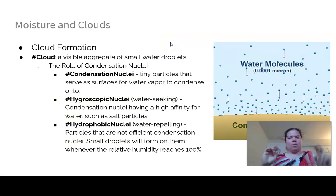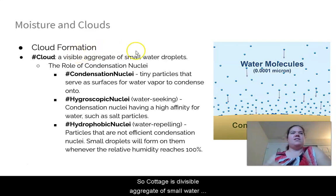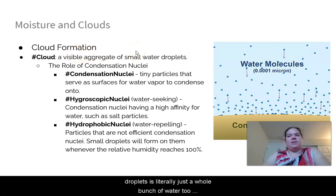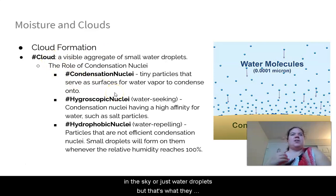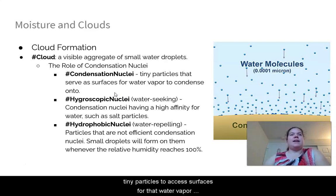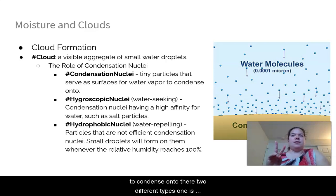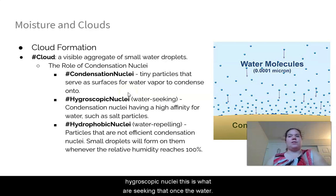A cloud is just a visible aggregate of small water droplets — billions of tiny water droplets together. To form clouds, we need condensation nuclei: tiny particles that act as surfaces for water vapor to condense onto. There are two types: hygroscopic nuclei, which are water-seeking (like salt — that's why open chips go stale quickly on a humid day), and hydrophobic nuclei, which repel water.